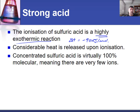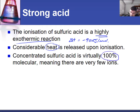That energy comes out in the form of heat, so a lot of thermal energy is a consequence of this ionization process. Concentrated sulfuric acid is very high in molecules and has a very small number of ions. This is going to be fairly important, particularly in the next video when we have a look at safety and transport associated with sulfuric acid.